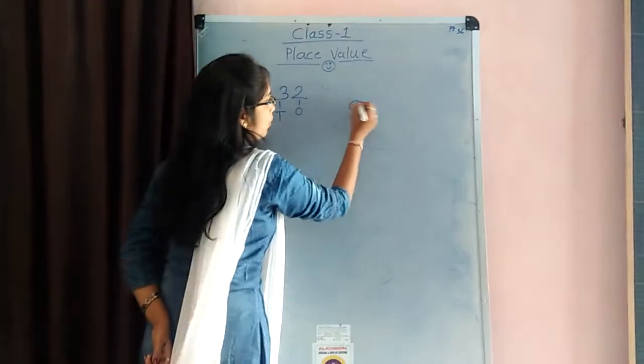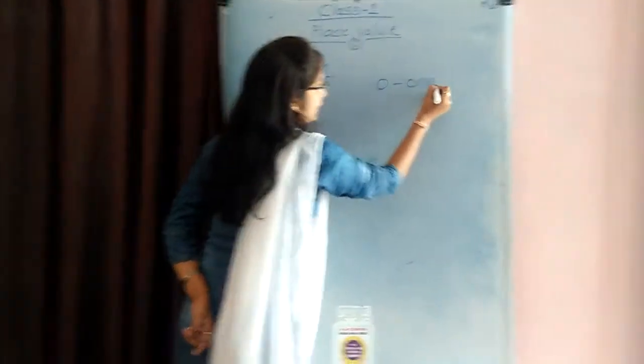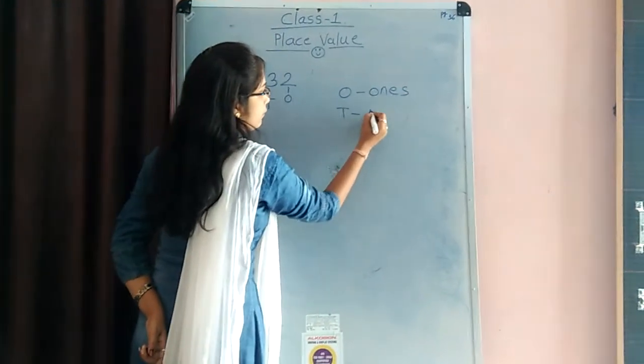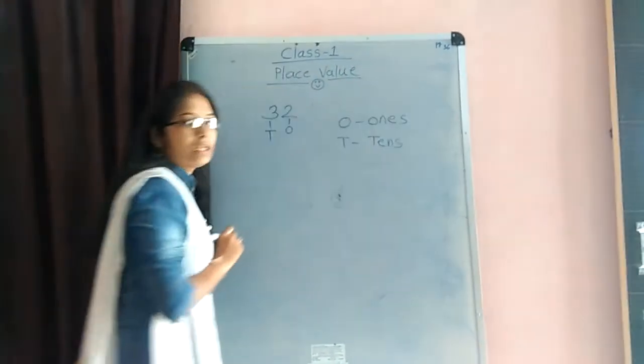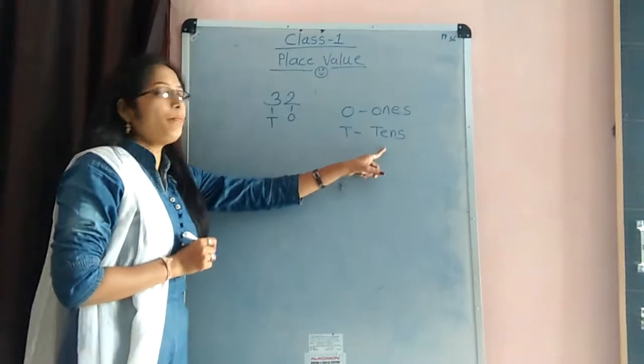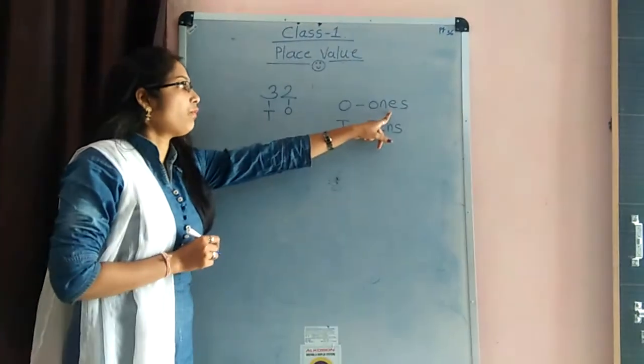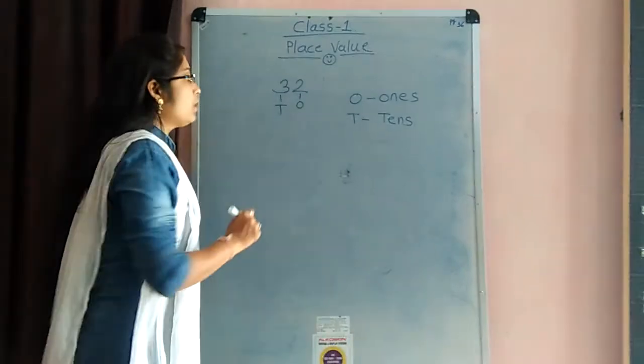O for 1s. O and E as 1s. And T for 10s. T, E and S, 10s. These two are place value. O for 1s, T for 10s. Okay.